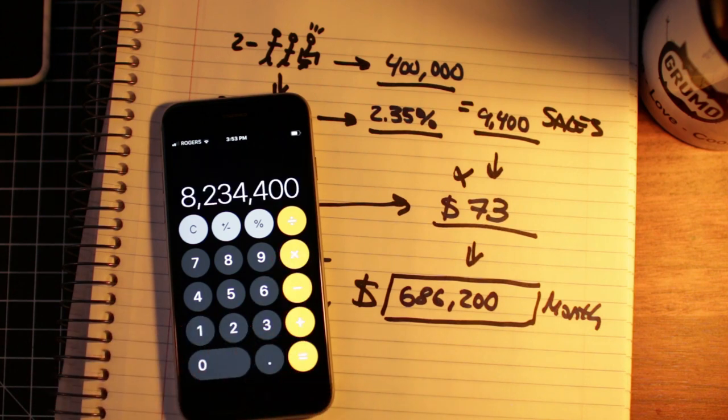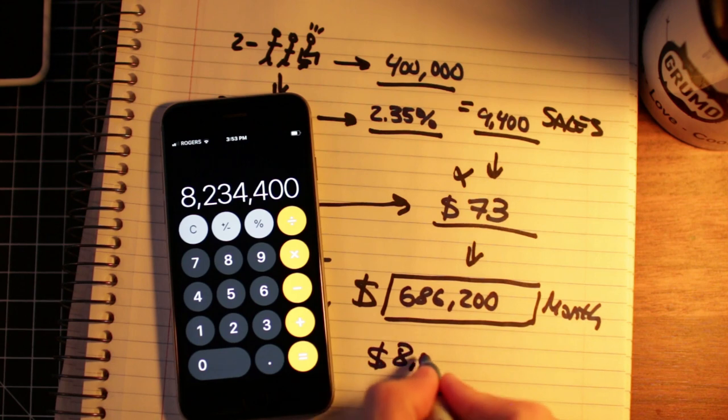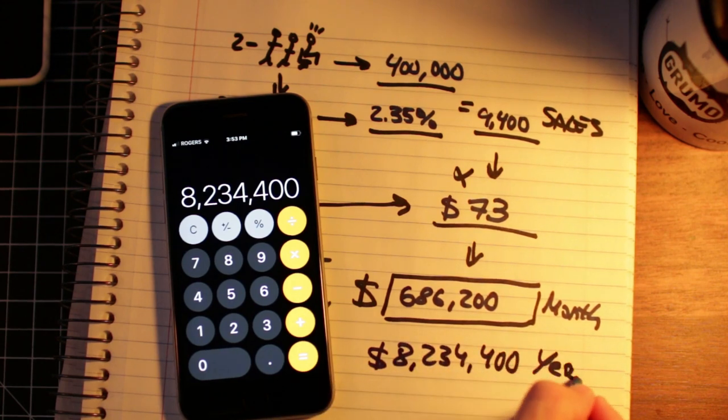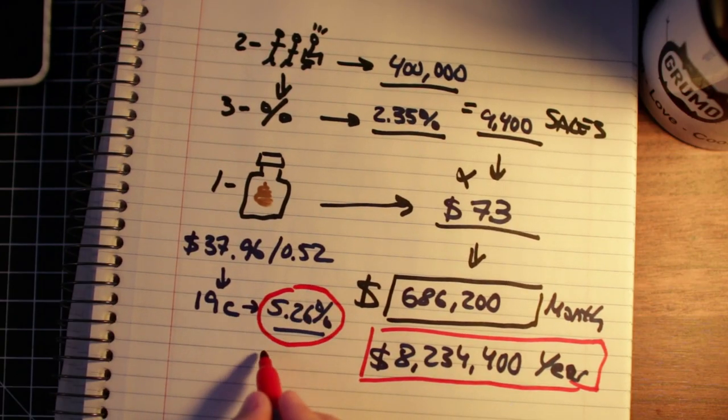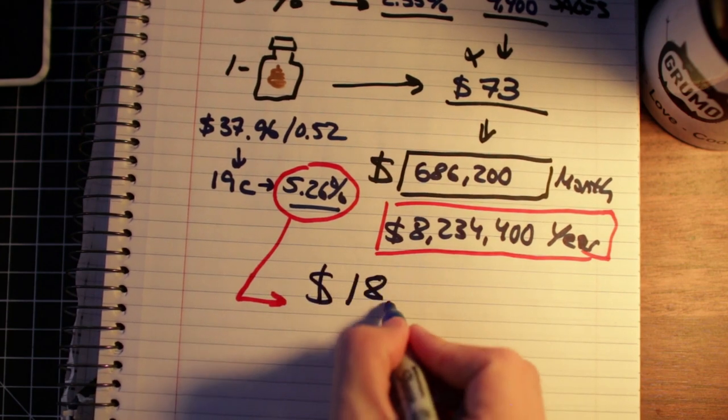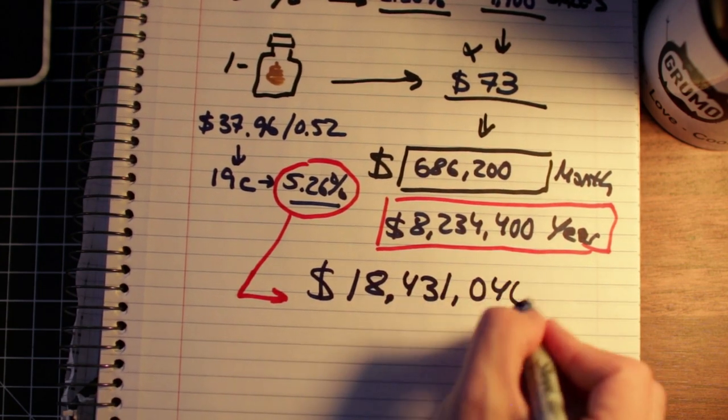Now multiply that by 12 months, and this stinky page lost in the sewers of the interwebs is generating over $8 million a year. And that's the low estimate. Using the EPC conversion of 5.26%, they could be making up to $80 million a year selling these pills. Holy poops! This page is no joke at all.